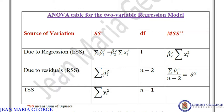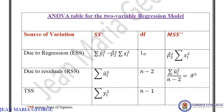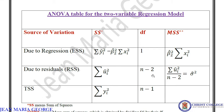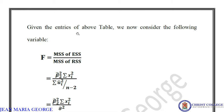The second component is due to residuals: RSS is sigma ui-hat squared, degrees of freedom is n minus 2 (since two parameters, beta-1-hat and beta-2-hat, are estimated), and the mean sum of squares is sigma ui-hat squared divided by n minus 2, which equals sigma-hat squared — the estimated variance. The third row is the total: ESS plus RSS equals TSS, and 1 plus (n minus 2) equals n minus 1 degrees of freedom.